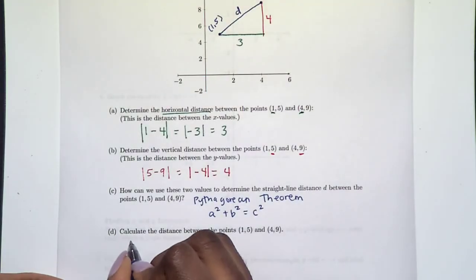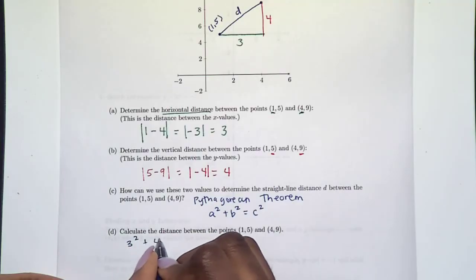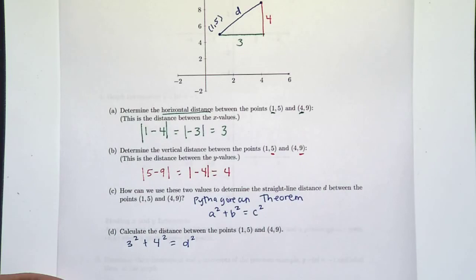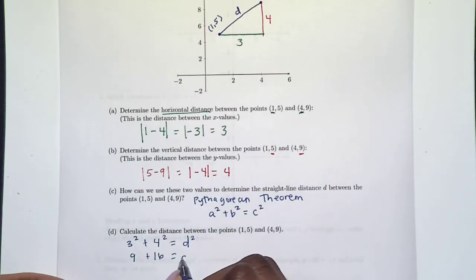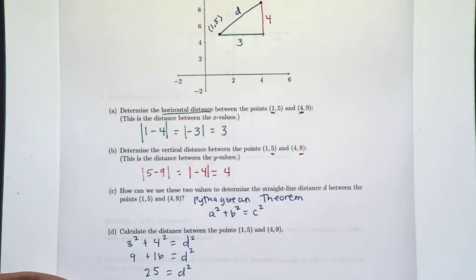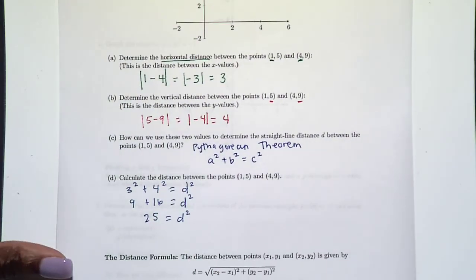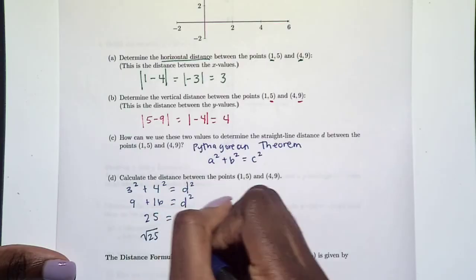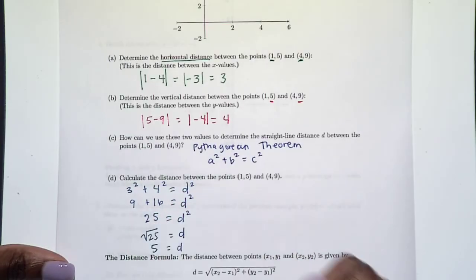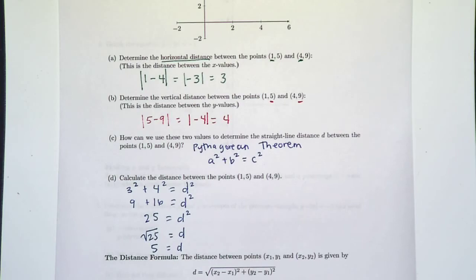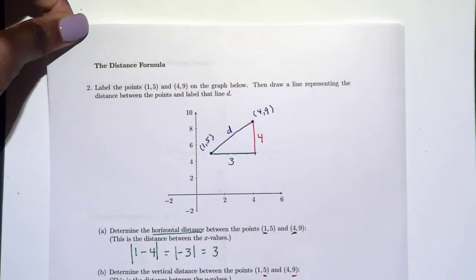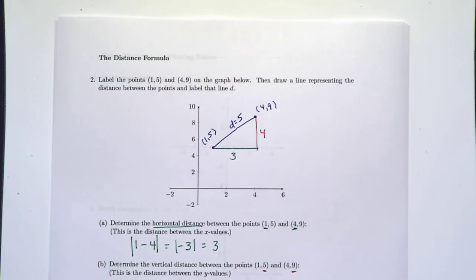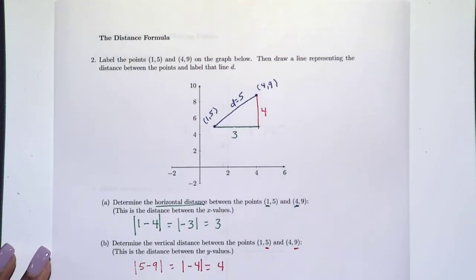Let's calculate the distance using the Pythagorean theorem. We have three squared plus four squared equals d squared, so nine plus sixteen equals d squared, which gives us twenty-five equals d squared. To solve for d, I take the square root, and the distance is five. Going back to the picture, the distance d equals five.